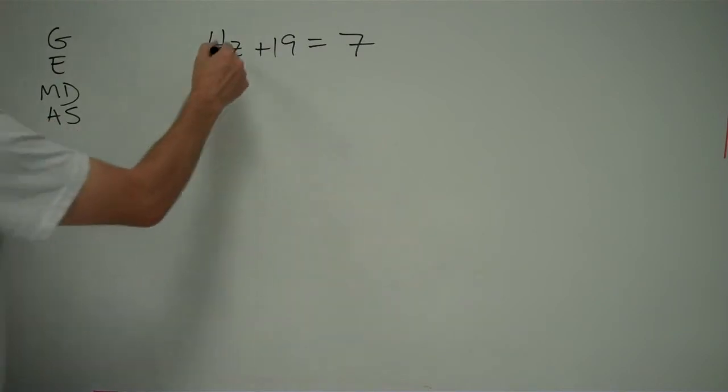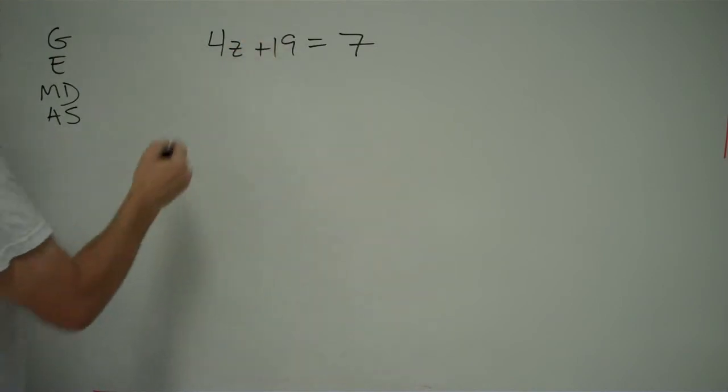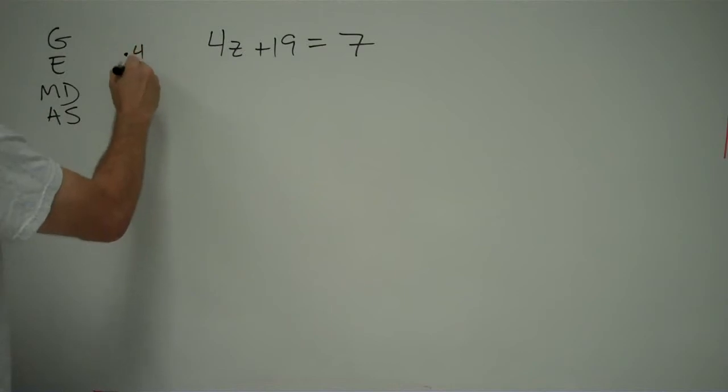So what is happening to z here? The first thing happening to z is it's being multiplied by four. The second thing happening to z is it's being added, you're adding 19 to it. So times four is the first thing, and then plus 19 is the second thing.